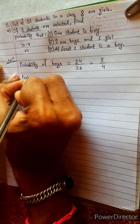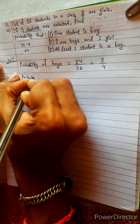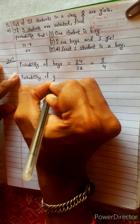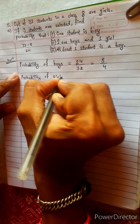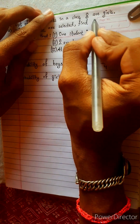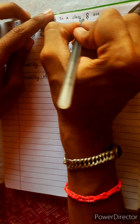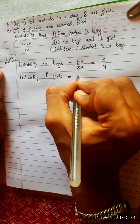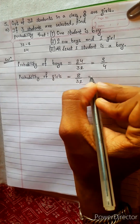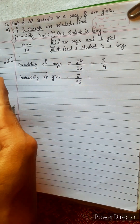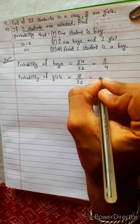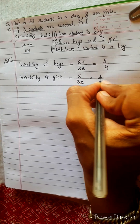Similarly, probability of girls. This will be 8 divided by 32, since there are 8 girls in the class. This is 1 by 4.